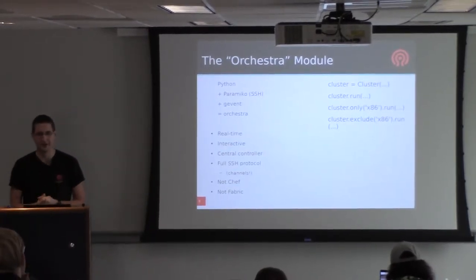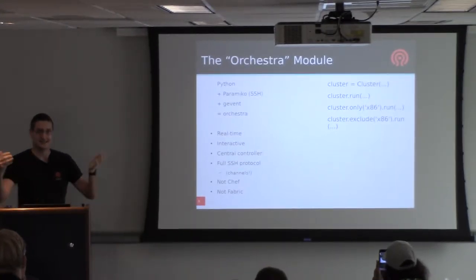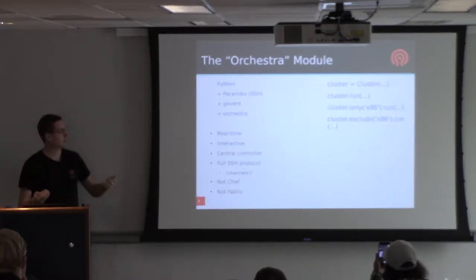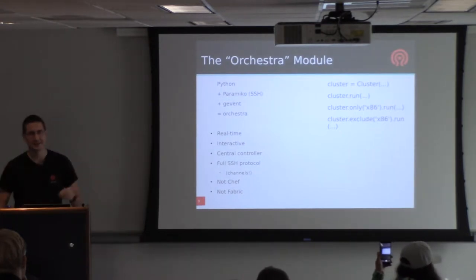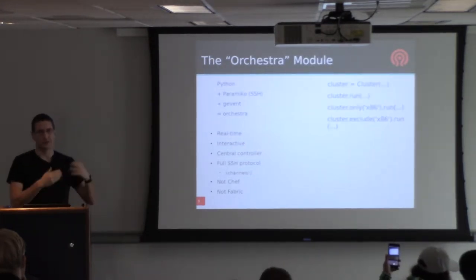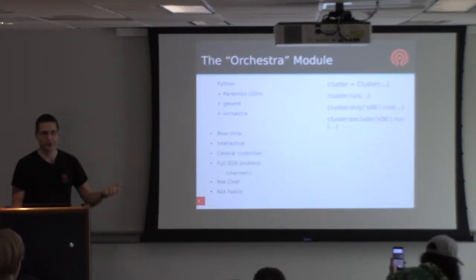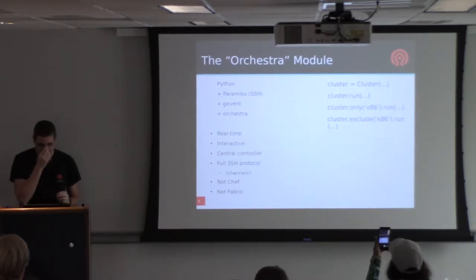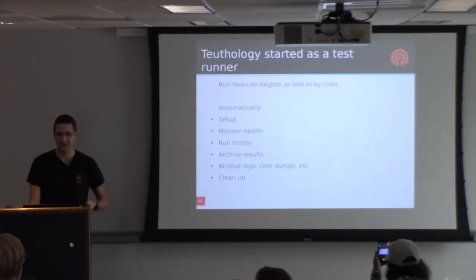We couldn't find anything accessible that would work for distributed systems - they were all mostly set up around single nodes. We really needed to be able to say 'that machine needs to turn off' or 'we need to kill this process running on that machine over there.' So TV sat down and wrote some Python code called the Orchestra module. Orchestra's purpose was to let us SSH into remote machines and do things to them, presenting machines as Python objects - a cluster object where you could run commands on every node.